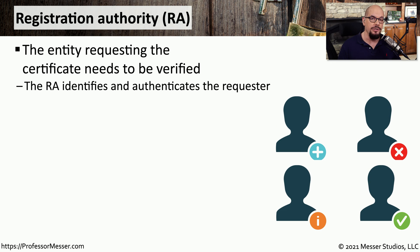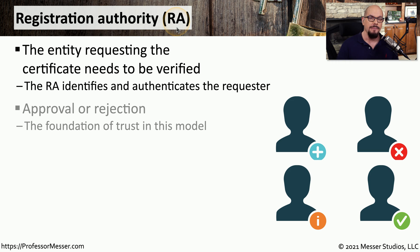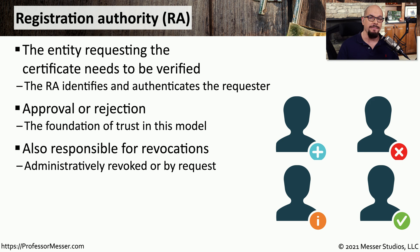In large organizations, you might have someone managing the certificate authority, and there may be another group that handles the registration authority, or RA. The registration authority goes through the process of identifying who the requester happens to be, they perform some validation of that requester, and then ultimately decide if that certificate should be signed. This is a critical step when working with certificate authorities, because everything is based on the trust of that CA. If somebody is performing additional checks and balances, then you have a stronger level of trust for that signed certificate. The RA may also be responsible for revocations — if a certificate is deemed to have been compromised, the RA can revoke that certificate and make it invalid for anyone connecting to that service.